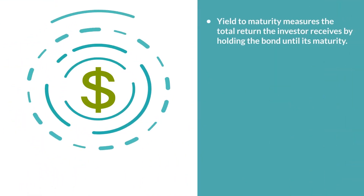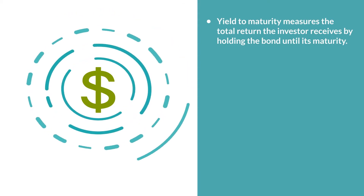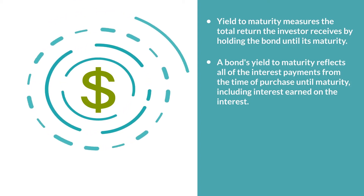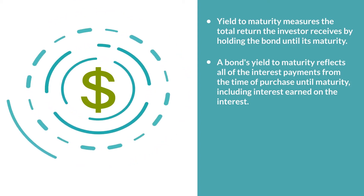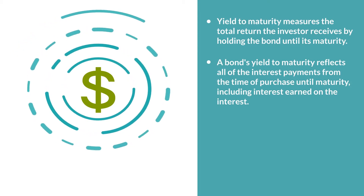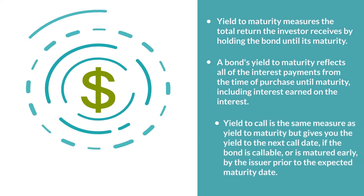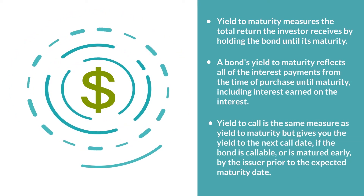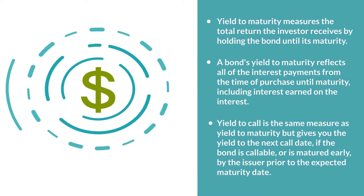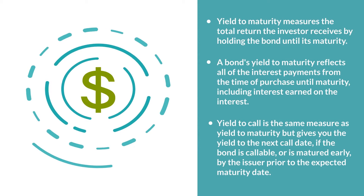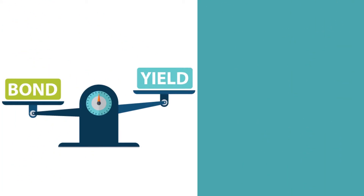Yield to maturity measures the total return the investor receives by holding the bond until its maturity. A bond's yield to maturity reflects all of the interest payments from the time purchased until maturity, including interest earned on the interest. It also includes any price appreciation or depreciation on the bond. Yield to call is the same measure as yield to maturity, but gives you the yield to the next call date if the bond is callable, or is matured early by the issuer prior to the expected maturity date. As we will illustrate again, the key concept to remember is a bond's price always moves inversely to its yield.